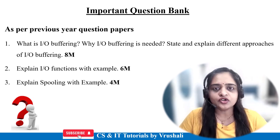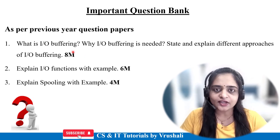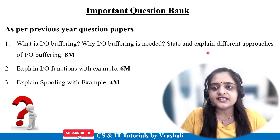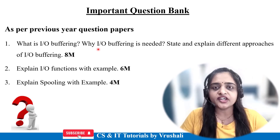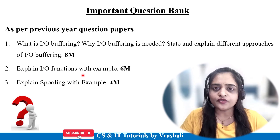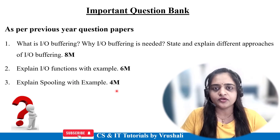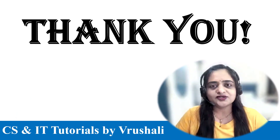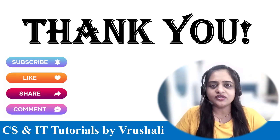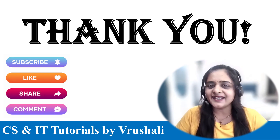Based on previous year question papers, the most important questions are: What is IO buffering and why is it needed? State and explain different approaches of IO buffering for 8 marks — this question recurs in every paper. Explain IO functions with examples for 6 marks, and explain spooling with example for 4 marks. Please prepare the IO buffering topic in detail with examples. Thank you — this is all about IO management. Please subscribe the channel and keep learning.